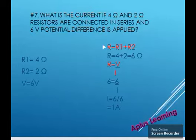Here is the next question. What is the current if 4 ohm and 2 ohm resistors are connected in series and 6 volt potential difference is applied? In the question, we are given two resistances. That is R1 is equal to 4 ohm and R2 is equal to 2 ohms.